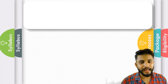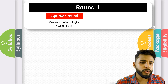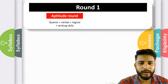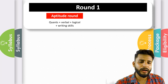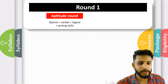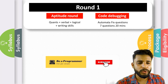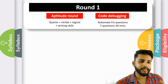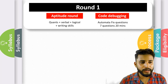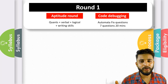Let's look at the process. Round one is common for both Gen C and Gen C Next. In the aptitude round you will get quants, verbal, logical, and writing skills sections. Writing skills means you will be given a topic on which you have to write an essay. This round will be hosted on MCAT only, just as it was last year. We will also discuss the syllabus in further detail, so don't worry about that.